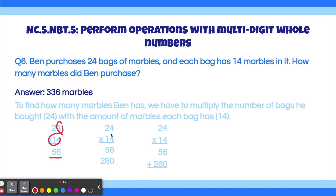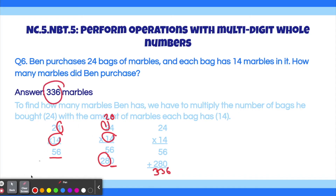Then we multiply 14 times 2, which is 28, and add a zero at the end because we're actually multiplying 14 times 20, giving us 280. Then we add 56 plus 280 to get 336, which is our answer.